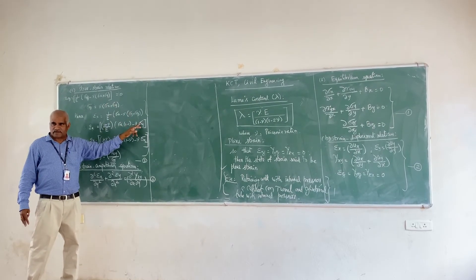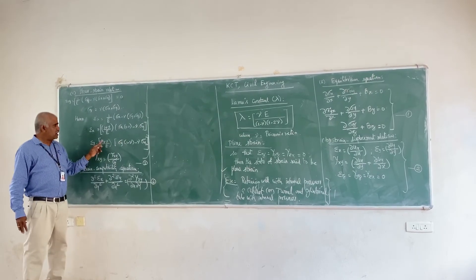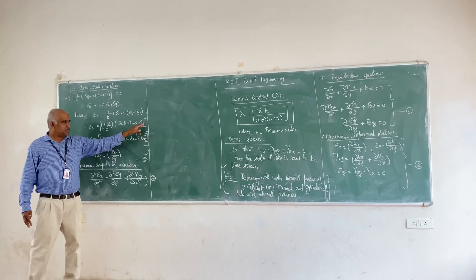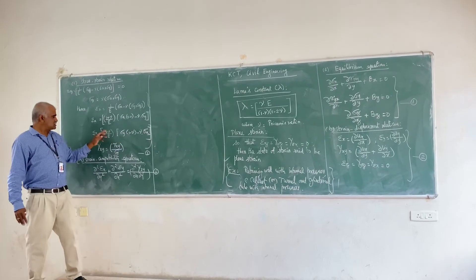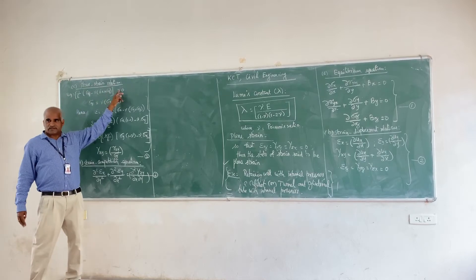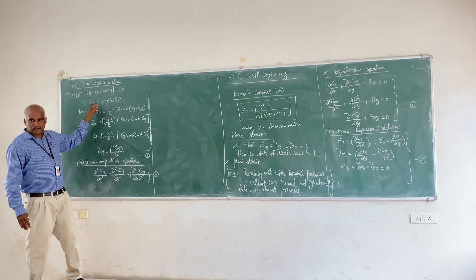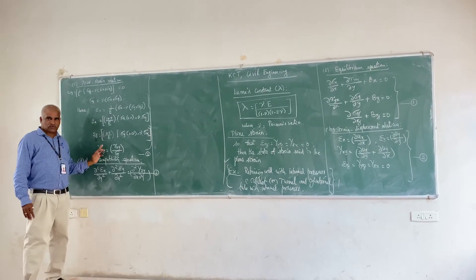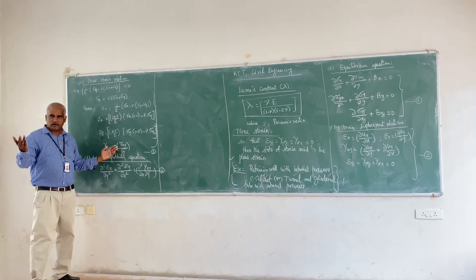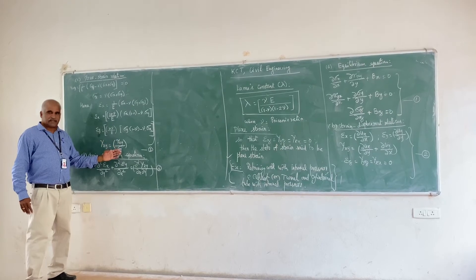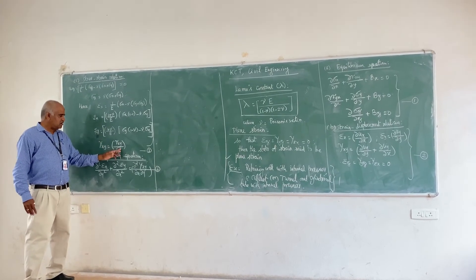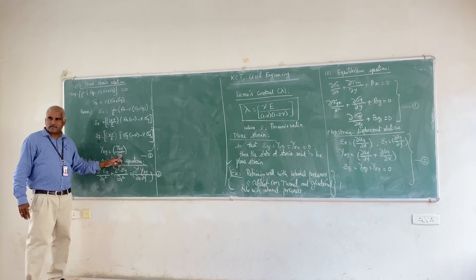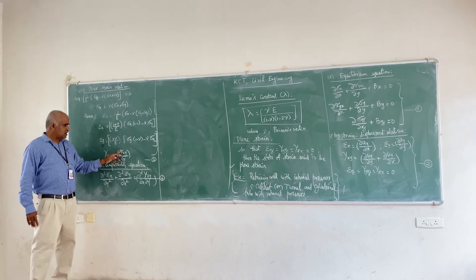After substituting and simplifying, epsilon_y = [(1 + nu)/E] · [sigma_y · (1 − nu) − nu · sigma_x]. Also, epsilon_z = 0, which confirms sigma_z = nu(sigma_x + sigma_y). The shear strain relation remains the standard one: gamma_xy = tau_xy / G, where G is the shear modulus.